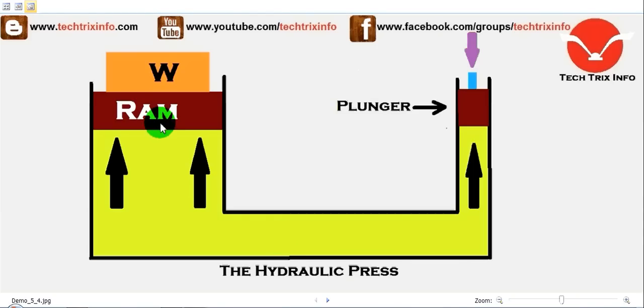On the bigger cylinder, we can see it contains a ram, and on the smaller cylinder, we have a plunger. On top of the ram is the place where we place the load. As we've already discussed, this works on the principle of Pascal's law.